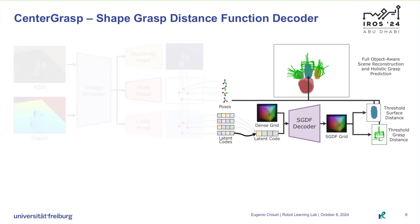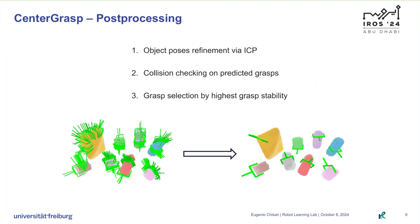The remaining surface points and grasps are then transformed from their canonical frame to the camera frame using the predicted 6D object poses. Applying the SGDF decoder for each detected object allows us to reconstruct the shape and predict the grasps of the entire scene. To achieve higher precision, we apply post-processing steps: object poses are refined via point-to-plane ICP to match the predicted shape with the observed point cloud. The list of predicted grasps is filtered to discard all grasps in collision with the observed scene. Of the remaining grasp poses, we select the one that minimizes the torque around the grasp point, estimated using the gravitational force acting on the centroid of the predicted shape. These poses are then transformed from camera frame into the robot base frame, and the grasp is executed via an inverse kinematics controller.